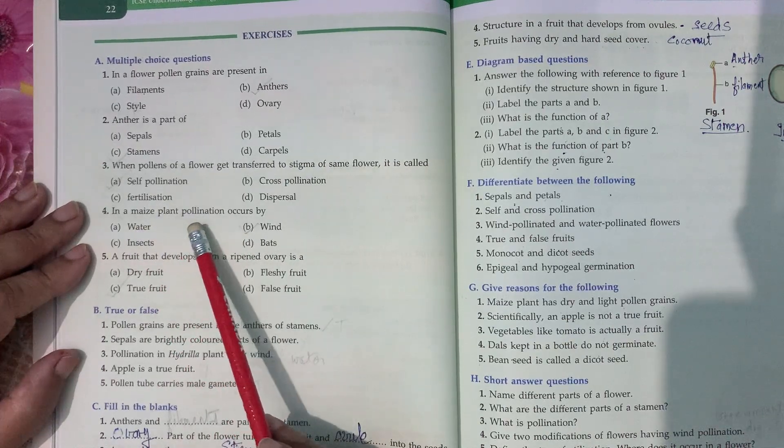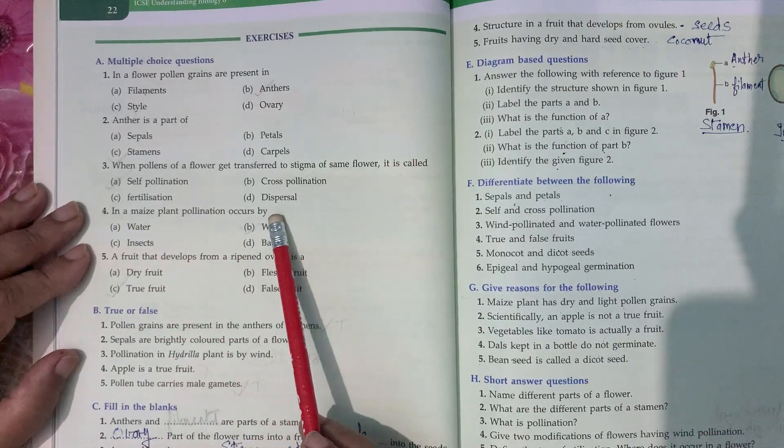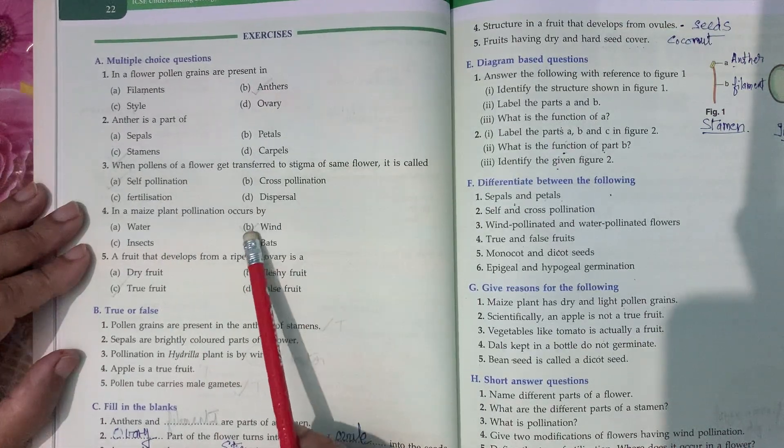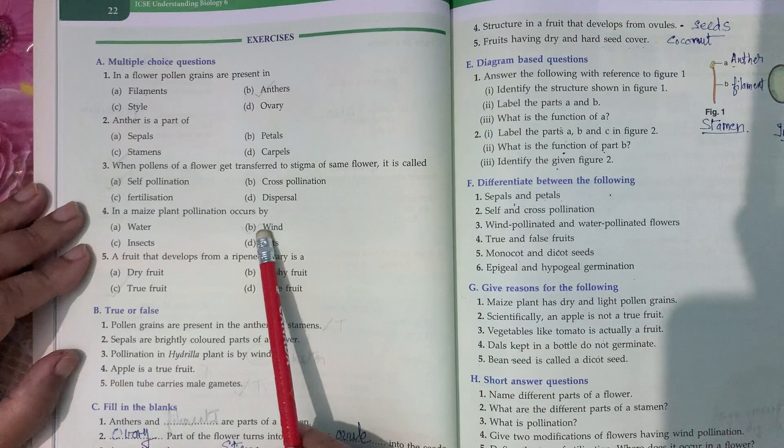In a maize plant, pollination occurs by water, insect, wind, or bats. It occurs by wind.